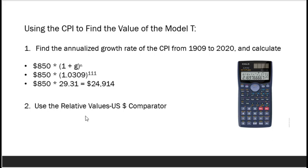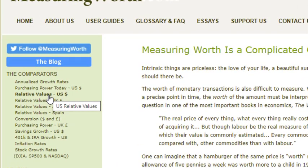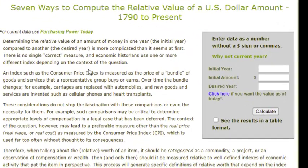A second way that we can do the same calculation is, of course, to let Measuring Worth do all of the calculating for us. We don't even need a calculator if we just use one of the comparators on the website for relative values in U.S. dollars. So let's go back there and show how this works. Now we're back on Measuring Worth, and we want to do a calculation of a relative value for a number in U.S. dollars, so we're going to click on this link for relative values U.S. dollar.